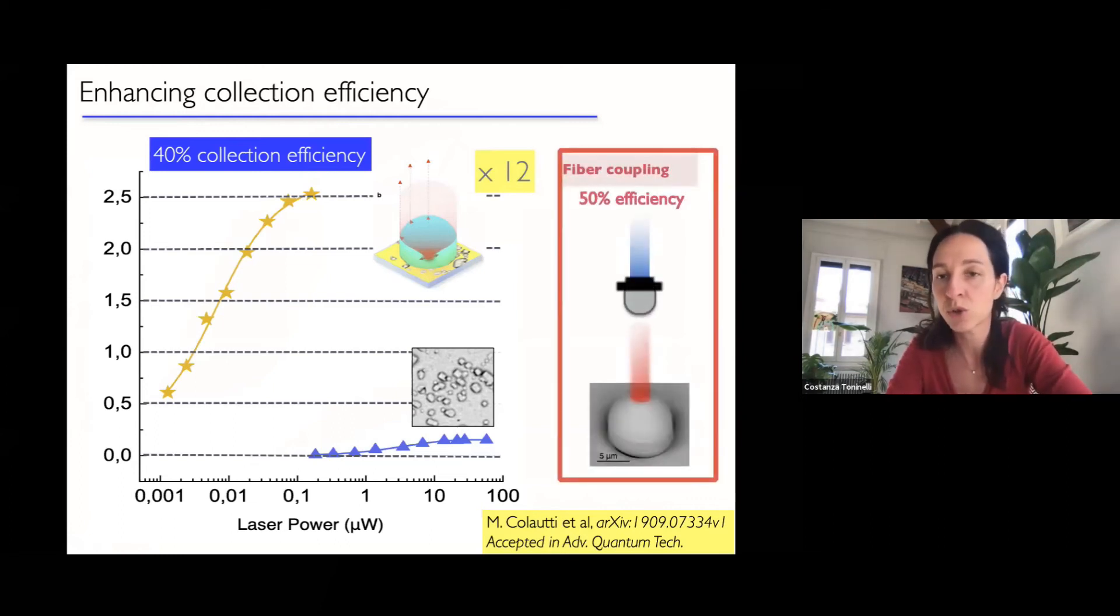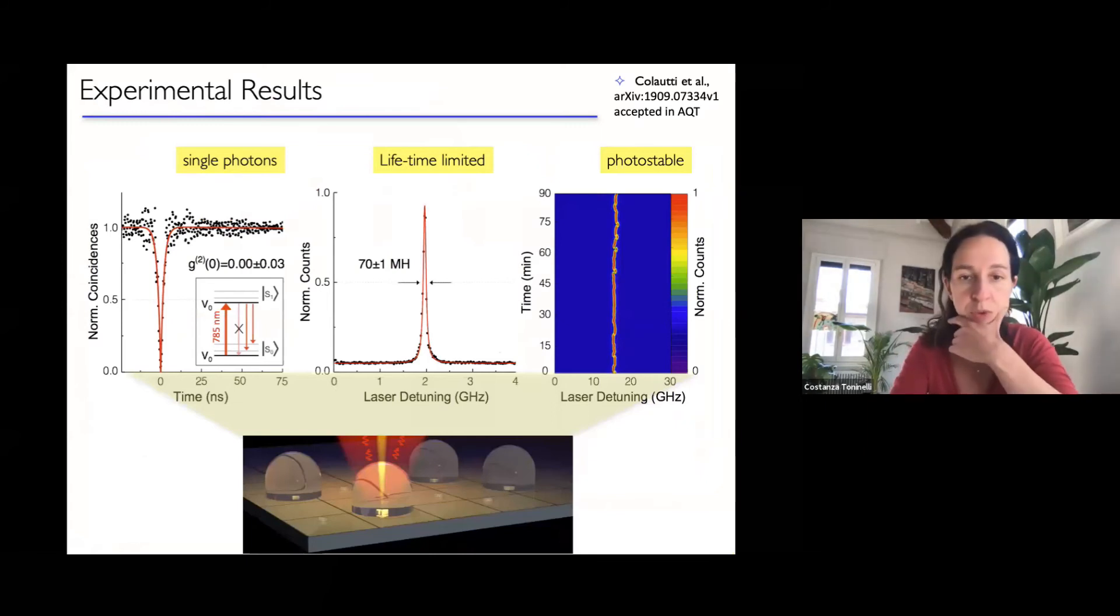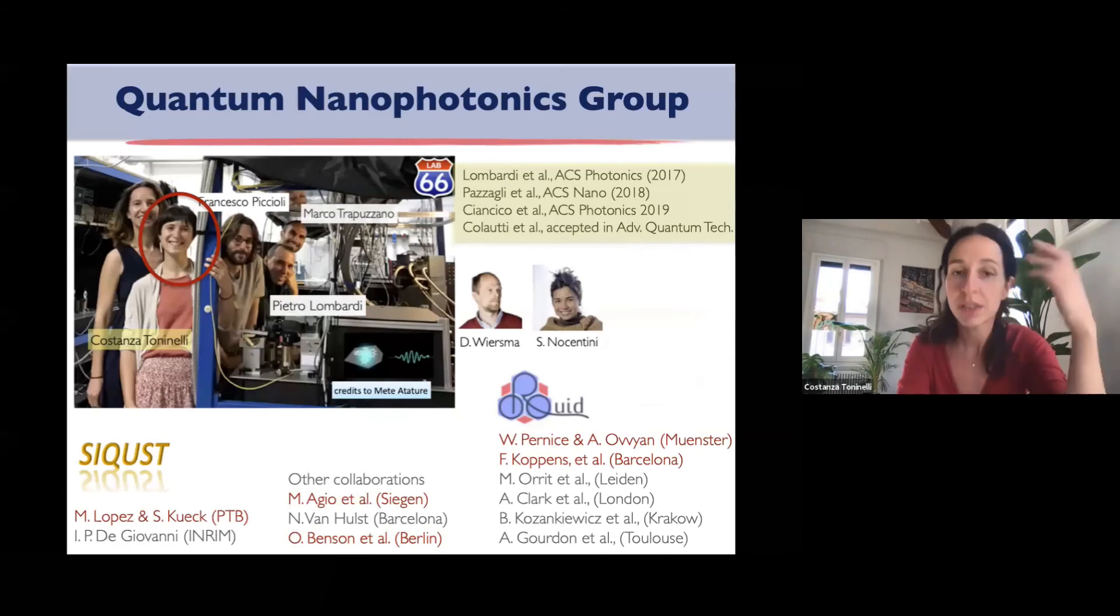We were very happy with that and also because this corresponded to a nice spatial mode resulting in a 50% collection efficiency into a single mode fiber. But how about the coherence properties of such photons? We said that this is typically not trivial to obtain inside a microstructure system. Here what you are observing is instead that the single photon purity is very good and is not affected by any residual fluorescence of the polymer. The emitter is still close to the lifetime limit and also photo stability is preserved. With that I'd like to acknowledge all my collaborators in Florence and abroad and in particular Maja Colautti who was essentially the main author and who dared to try this experiment.